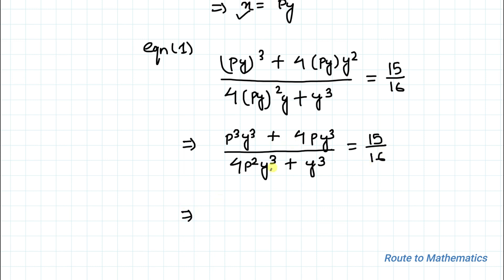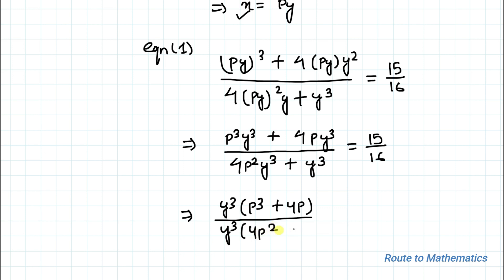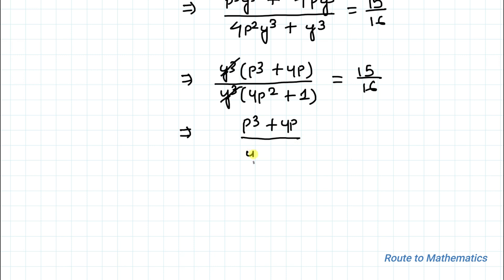Taking y³ common from numerator and denominator, the y³ terms cancel out, and we have (p³ + 4p) divided by (4p² + 1) equals to 15 by 16.